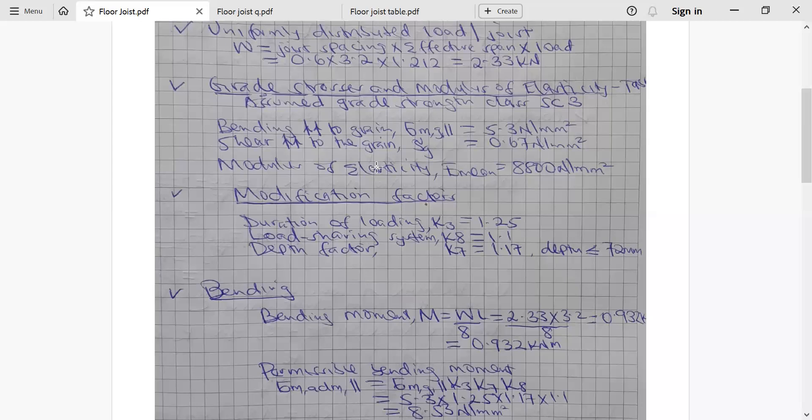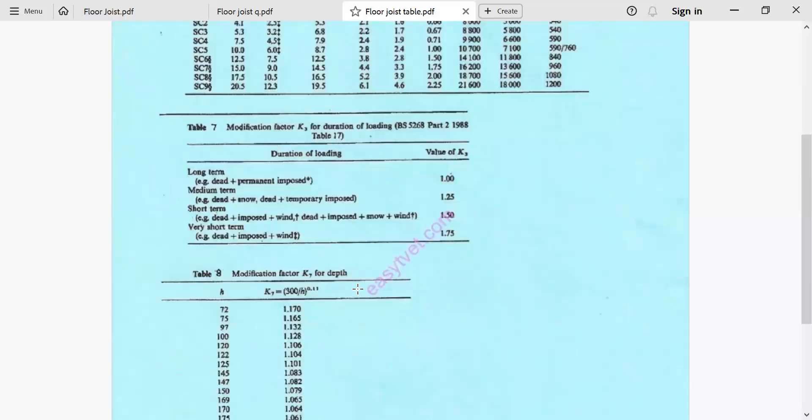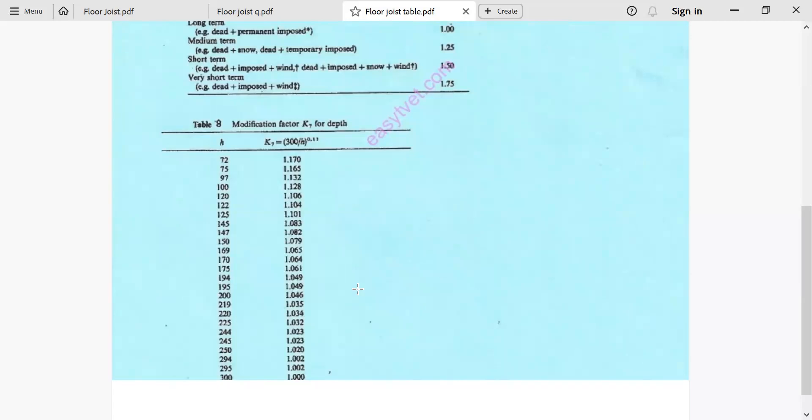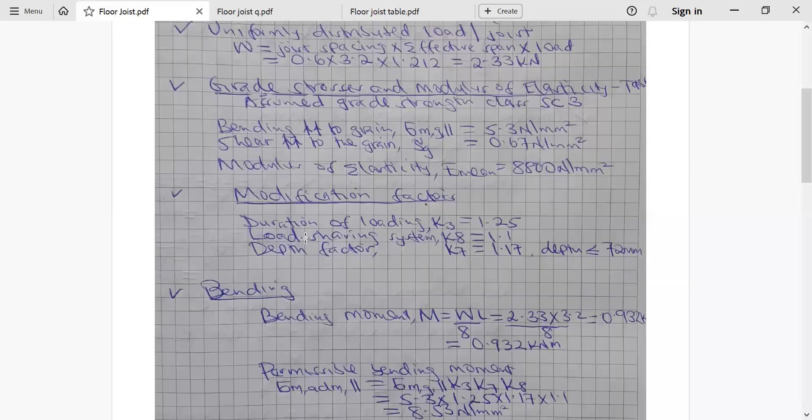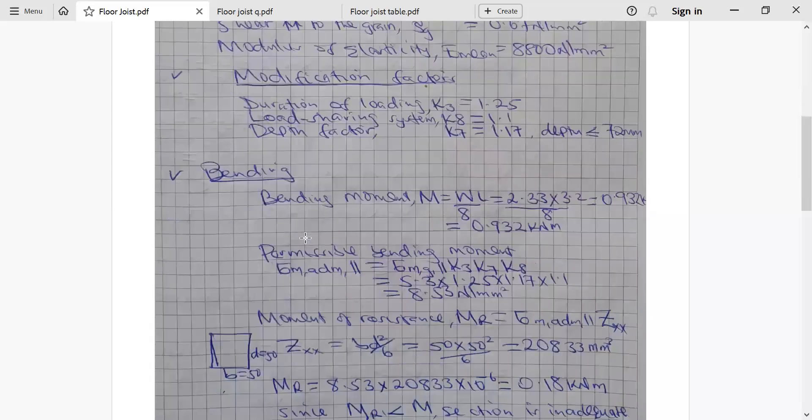Let me show you the depth factor, which is K7. The minimum depth here is 72 and it ends with 300. This is the formula. But remember our section is 50 by 50, meaning it is less than 72. From the BS code on timber design, we were told if the section is below 72 mm, you take depth factor K7 as 1.17. So we are going to use a K7 of 1.17. Let us proceed to bending.